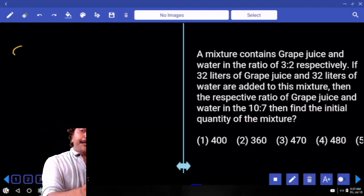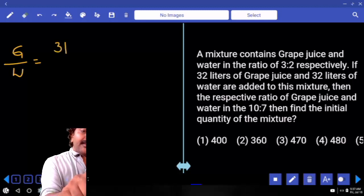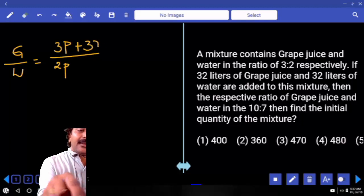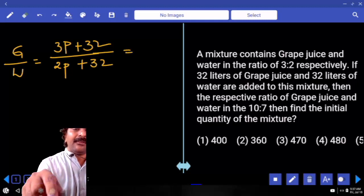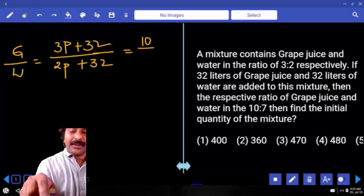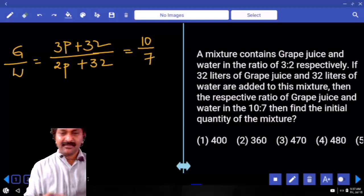So grape to water, initial ratio, 3 parts and then 2 parts. How many liters grape added? How many liters of water added? 32. This is the final quantity of grape and water which is in the ratio 10 by 7. Correct.